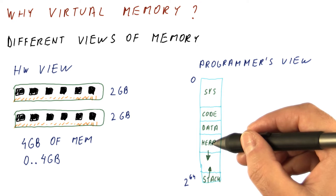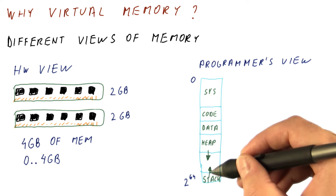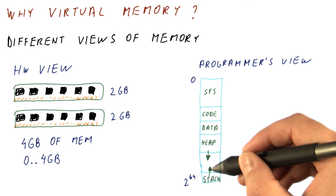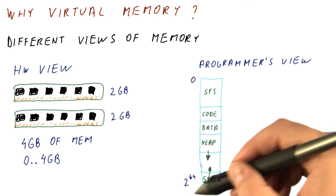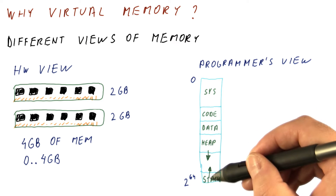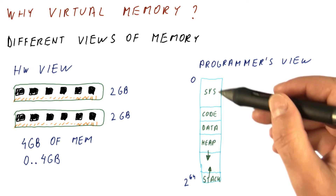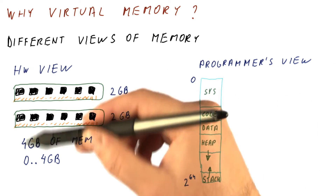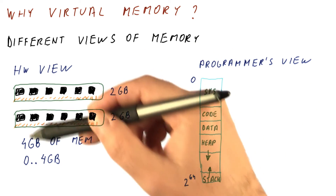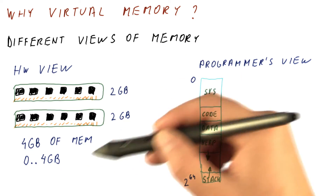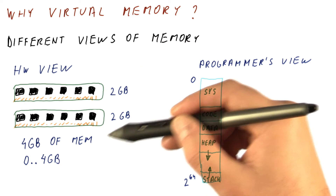The programmer simply wants to malloc or push things on the stack, and they never run out of memory. And in a 64-bit address space, chances are they won't actually run out of memory. But the problem is the actual amount of memory that they're using might be less, or it might be much more than the actual memory that the machine has.